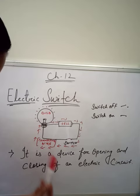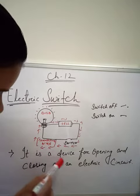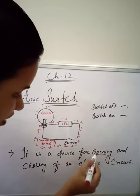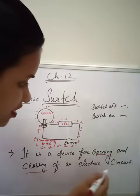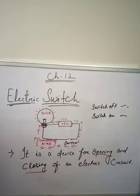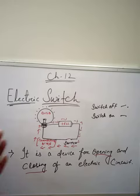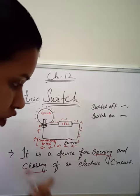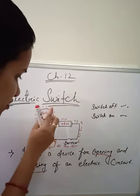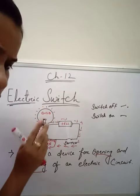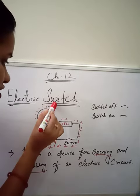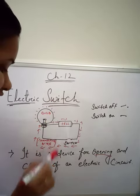Now the definition of the electric switch: it is a device for opening and closing an electric circuit. Whenever you want, you can open the circuit — it becomes switch off and the bulb is not going to glow. When you switch on or close the circuit, the bulb will start glowing. This applies not only to electric bulbs but to all electric equipment. So the electric switch is very, very important.